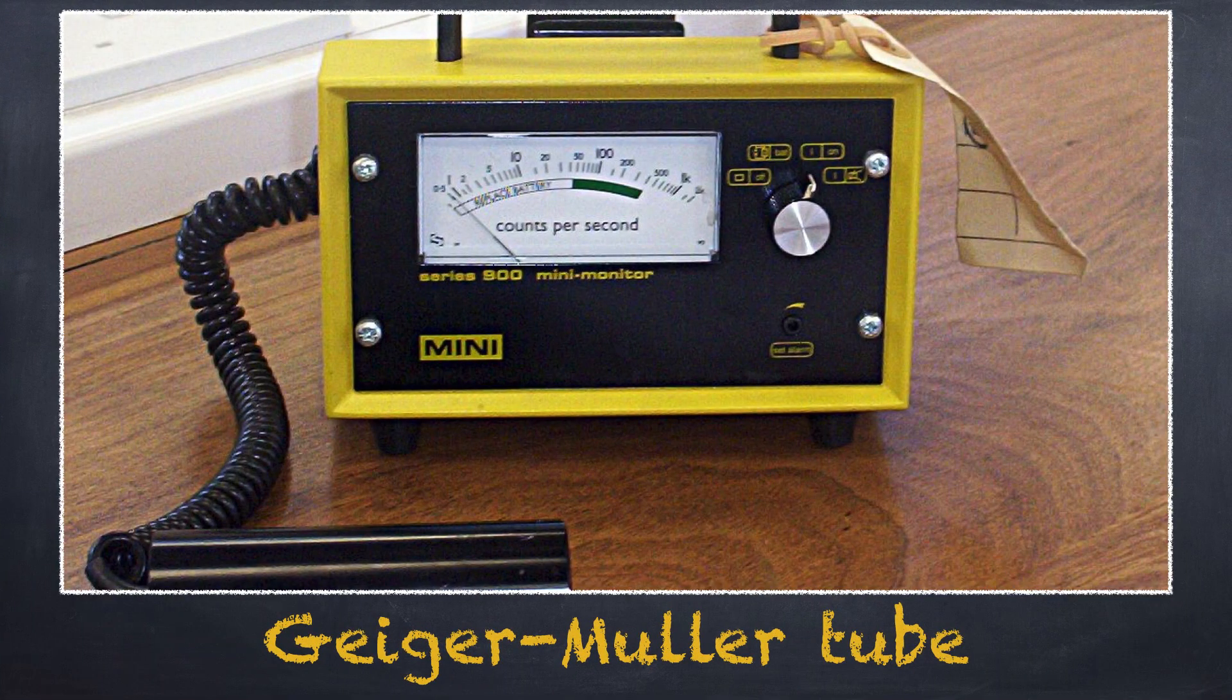The Geiger-Müller tube is a device used to detect radiation. It is also known as a GM tube or a Geiger counter.